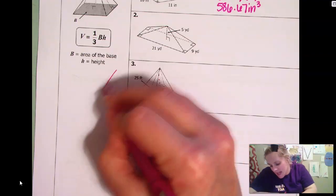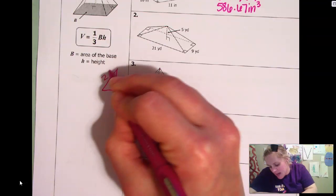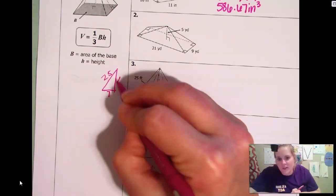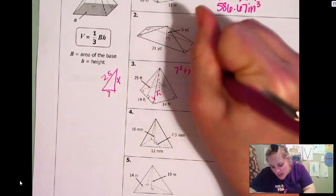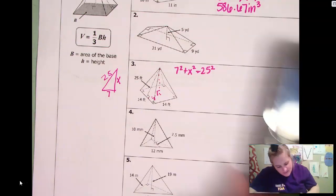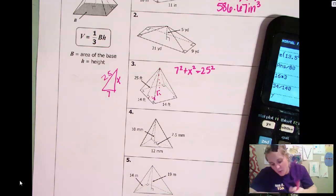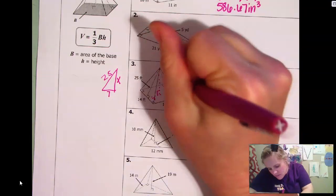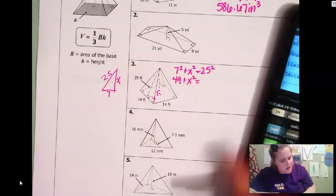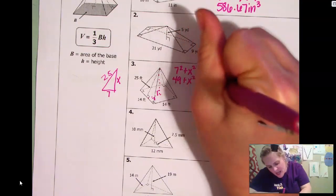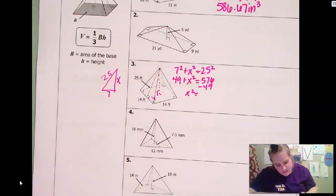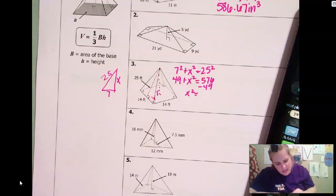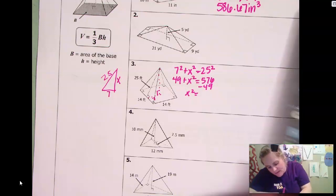So that would be a leg. And then 25 would be your hypotenuse. So basically I'm taking out a sliver. 25 is a hypotenuse. Seven is a leg. And I'm looking for the height, which is an unknown. So then I just do seven squared plus X squared equals 25 squared. So seven squared is 49. Plus X squared plus 25 squared is 576.